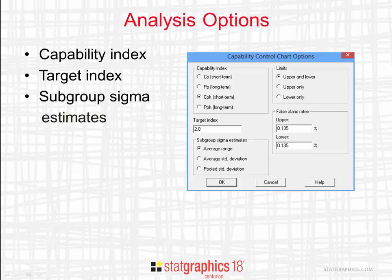If the capability indices to be plotted are based upon subgroup data, indicate how the standard deviation sigma has been estimated. You can choose between Average Range, Average Standard Deviation, or Pooled Standard Deviation.